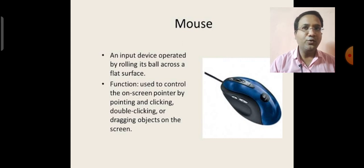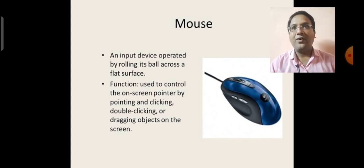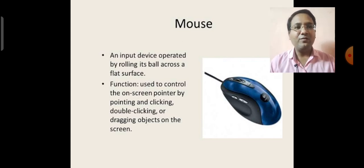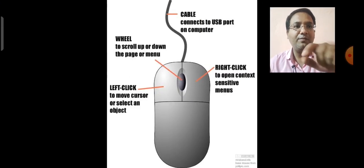When you move the mouse the pointer also moves in the same direction. It is used to draw pictures also. By the mouse you can select any object from the computer screen. You can draw anything. These are some functions of a mouse.